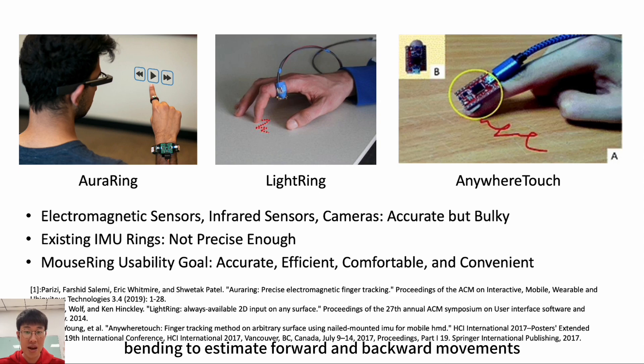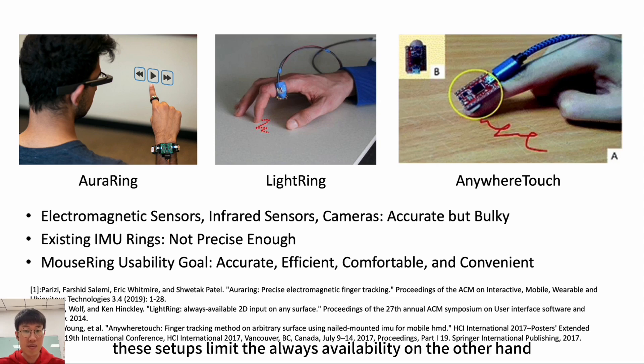LightRing first proposed using an IMU to estimate lateral finger movements and an infrared sensor to perceive finger bending to estimate forward and backward movements. While some of these projects can achieve high precision, they often require the assistance of additional devices, such as smartwatches that emit signals or large sensors like an infrared emitter. These setups limit the obvious availability.